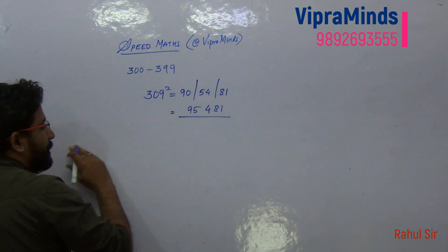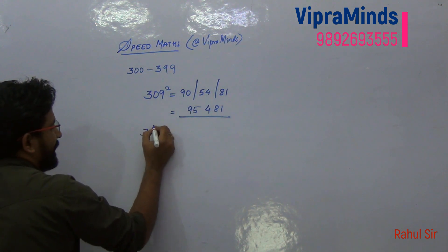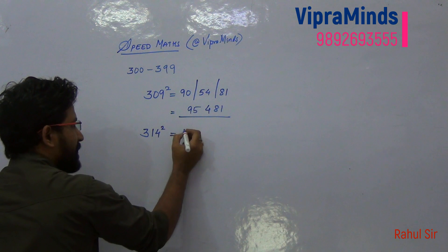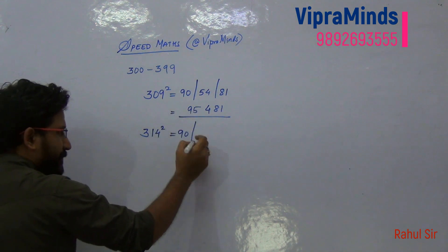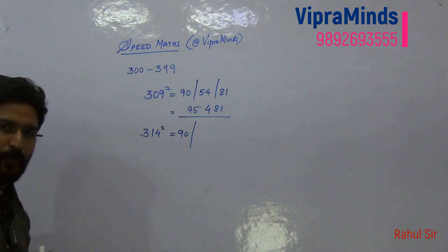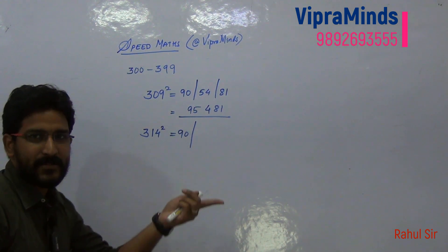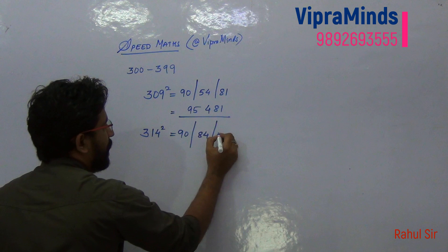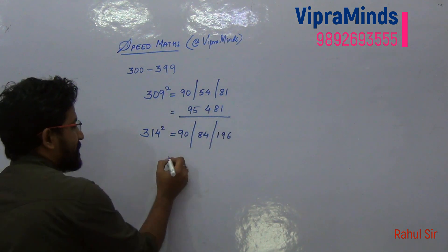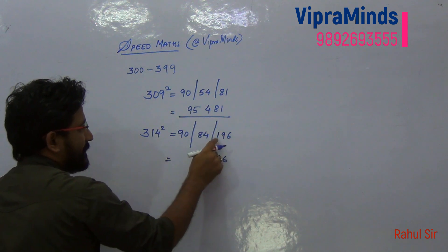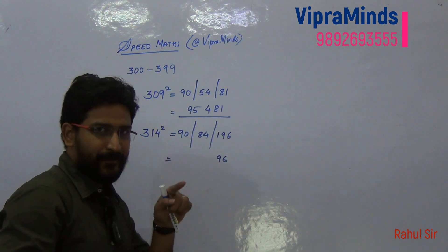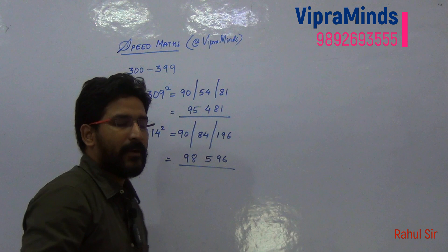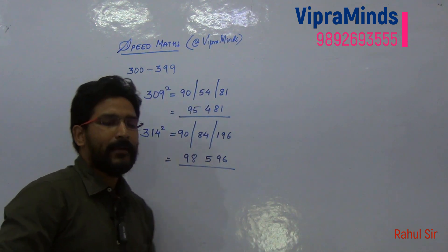Let's take another example: the square of 314. Write 90 in the first block. Multiply 14 by 6: 14 times 6 is 84. The square of 14 is 196. Write 96 in the last block and carry forward 1, making the middle block 85. Write 5 in the middle block and carry forward 8. So 90 plus 8 is 98. Your answer is 98596.